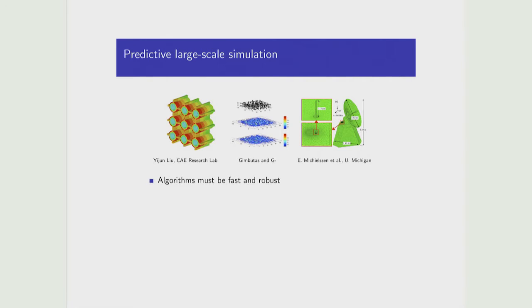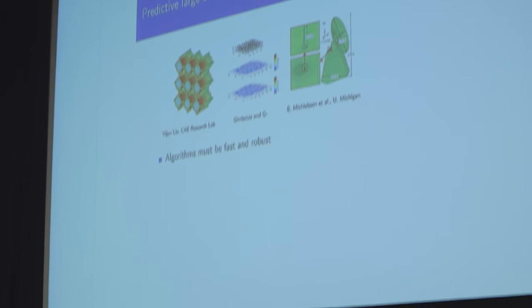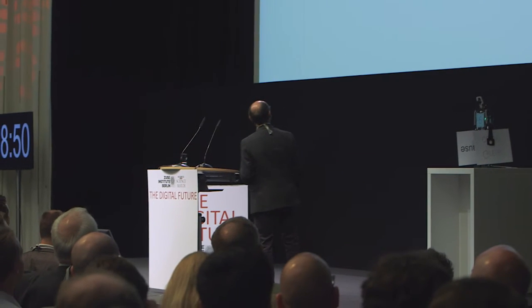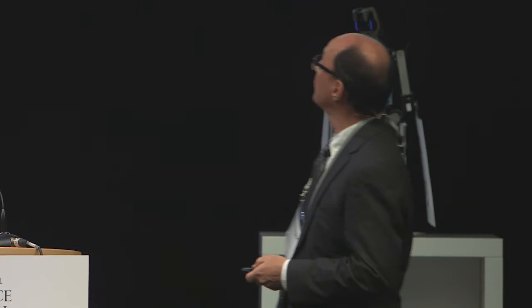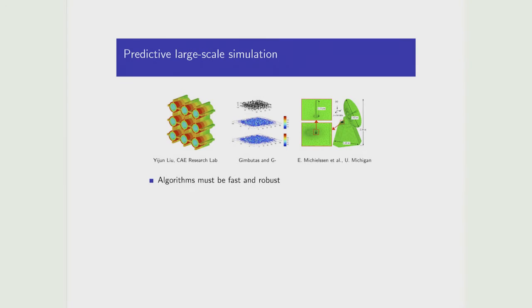These are typical examples of the kind of things one wants to use large-scale computing for. On the left is a model of a fuel cell. The second is an example of a complicated material — a microstructure of bits of gold embedded in a matrix, studying how light propagates through such a medium. On the right is a design problem of a radar dish with a very small antenna in the back. To do these kinds of calculations, algorithms must be fast and robust.